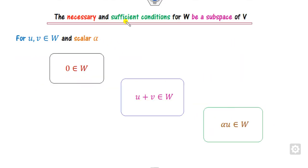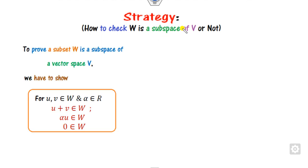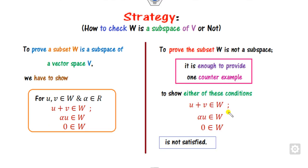The necessary and sufficient condition for W to be a subspace is that three properties are satisfied: W is non-empty (contains the zero vector), closure under addition, and closure under scalar multiplication. To prove it is a subspace, satisfy all three. To disprove it, it is enough to provide one counter-example showing any one condition is not satisfied.